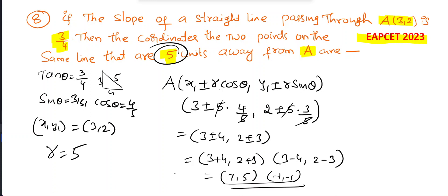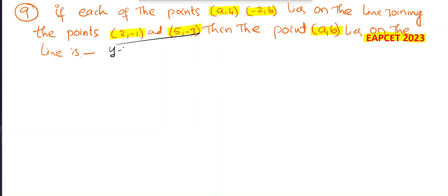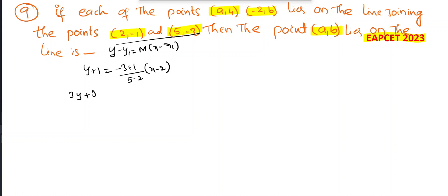Ninth question from TS MSet 2023: each of the points (a, 4) and (-2, b) lies on the line joining (2, -1) and (5, -3). Find the line equation using y - y1 = m(x - x1): y + 1 = [(-3+1)/(5-2)]·(x-2) = (-2/3)(x-2). Cross-multiplying: 3y + 3 = -2x + 4, giving 2x + 3y - 1 = 0.